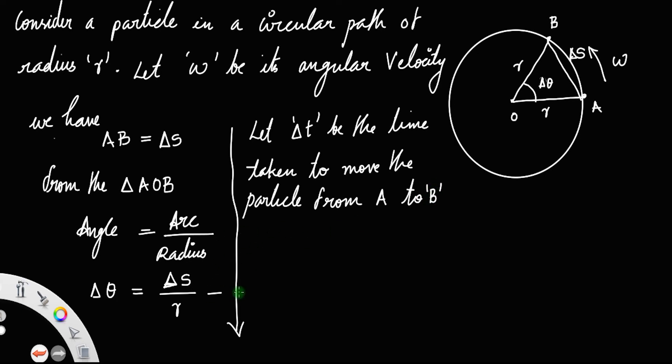What happens when we divide equation one by Δt? We get Δθ/Δt = (1/r)(Δs/Δt).